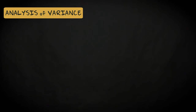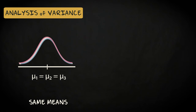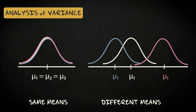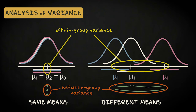If we use analysis of variance, we don't have to worry about an inflated error rate. Analysis of variance allows us to decide whether the groups are samples from the same population distribution with one and the same mean, or whether they're from different population distributions with different means. It does so by comparing the variance in the response variable between the groups with the variance within the groups.